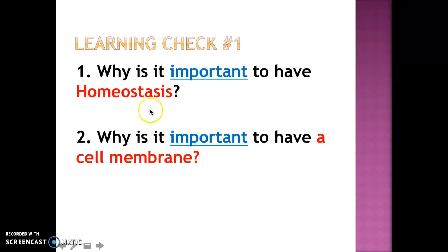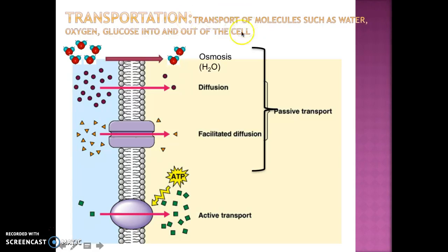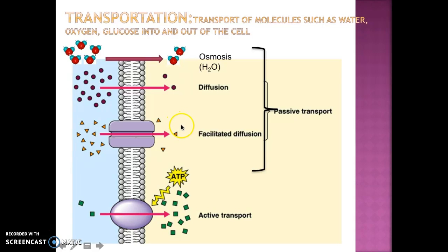Those are just three examples. Make sure that you answer these questions when the video stops: why is it important to have homeostasis and why is it important to have a cell membrane? Transportation of molecules such as water, oxygen, and glucose into and out of the cell are going to be different things that the cells will be transporting. We're going to be looking at all of these different types of transport today.